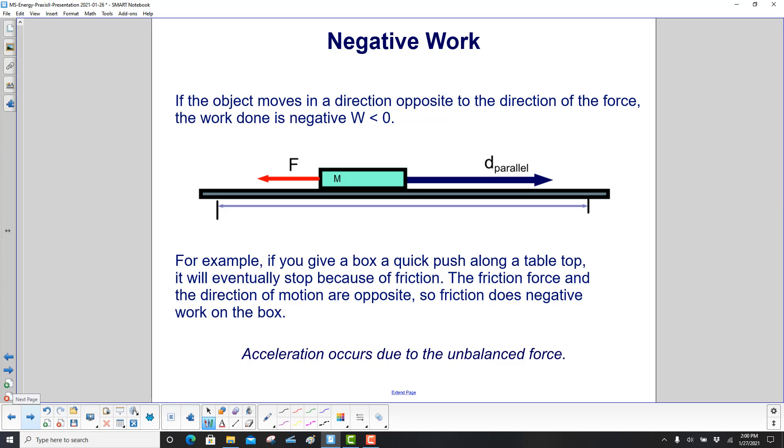If an object moves in a direction opposite to the direction of the force, objects moving this way, force is in this direction, the work done by that force is negative. W is less than zero. For example, if you give a box a quick push along a tabletop, setting it in motion in that direction, what's going to happen? It's eventually going to stop. Friction causes it to stop. The friction force is in this direction. So even though the object started moving this way, the friction force is doing what? It's slowing it down, and it's in the opposite direction. The friction is doing negative work on the box and decreasing its kinetic energy. And again, acceleration occurs due to the unbalanced force.